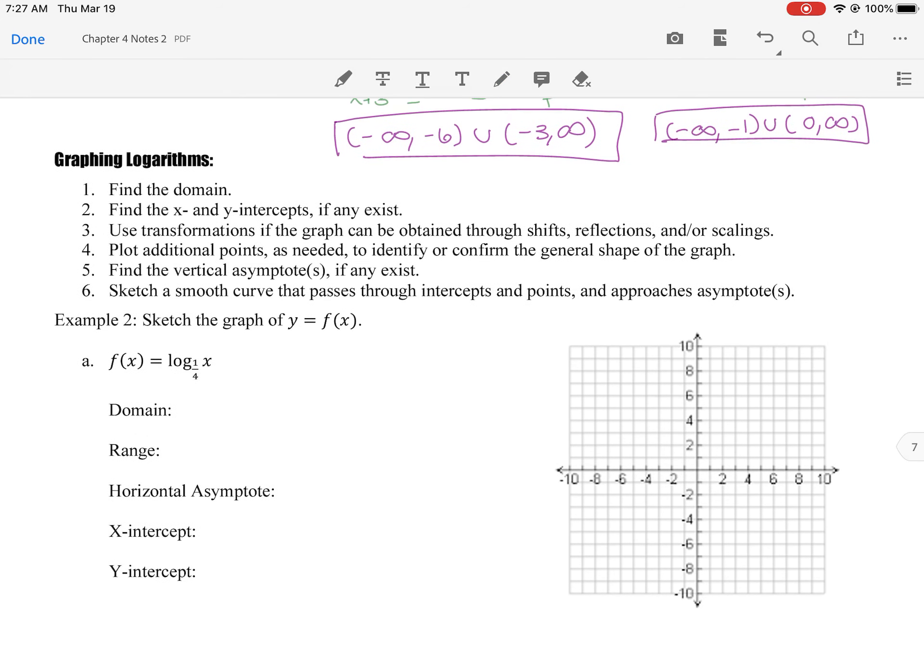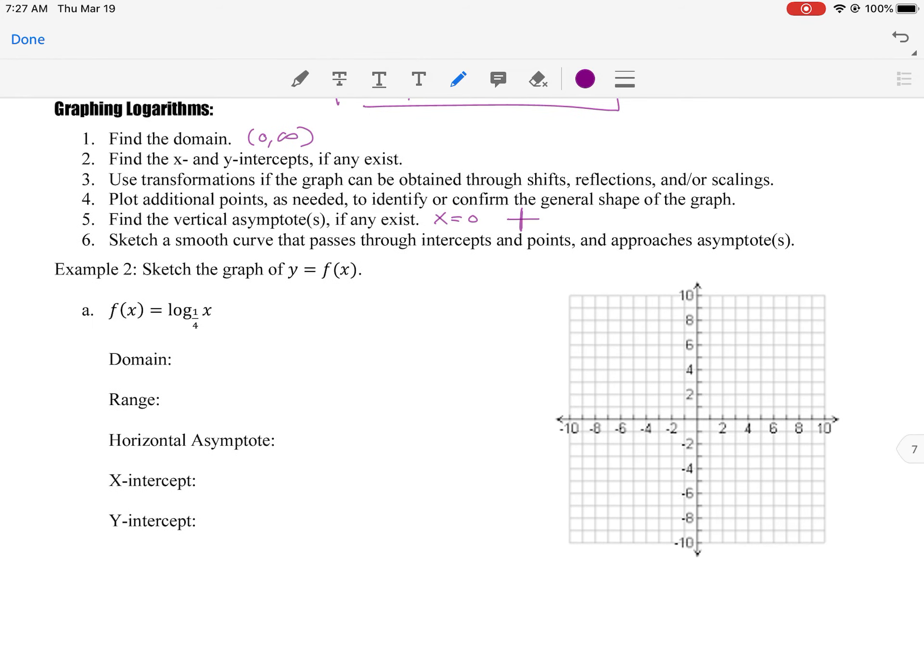Alright, let's talk about graphing a log. So first of all, in general, the domain of a log is 0 to infinity. And then I would consider any transformation that have happened. Find the x and y intercepts, if any, and then use transformations to graph it as needed. You can always identify additional points. And then the vertical asymptote usually is that x equals 0, so it's usually the y-axis. However, you know, if there's been a shift right or left, that could change things.